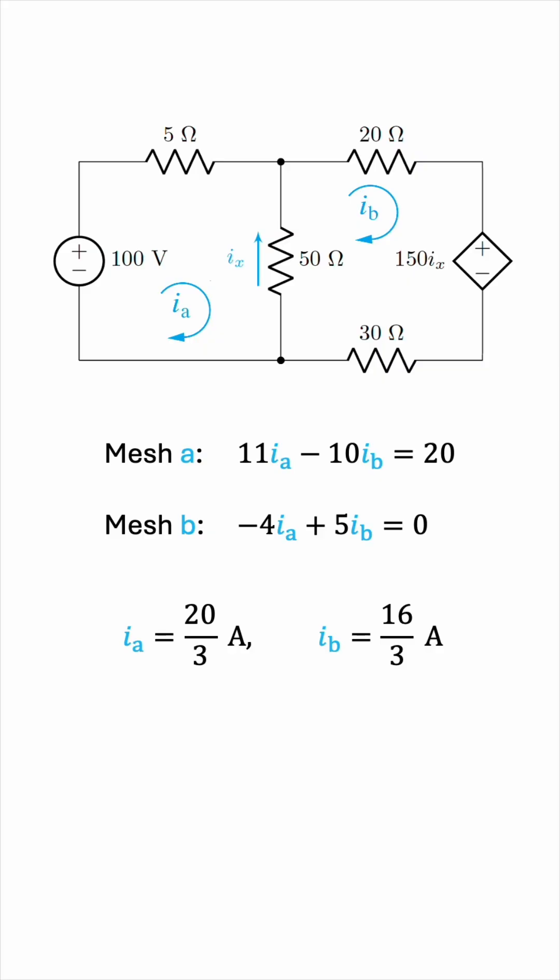And now we're ready to find the power delivered by the dependent source. In general, we have three equations for power: voltage times current, the square of the voltage divided by resistance, and the square of current multiplied by the resistance. When you want to find the power associated with a source, you can only use the first equation, because you don't know the resistance of a source. So you should always multiply voltage by current.